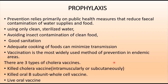For prophylaxis, prevention relies primarily on public health measures that reduce fecal contamination of water supplies and food. Use only clean, sterilized water for drinking and cooking. Avoid insect contamination of food. Good sanitation and adequate cooking of foods can minimize transmission, since Vibrio cholerae is sensitive to drying and heat.